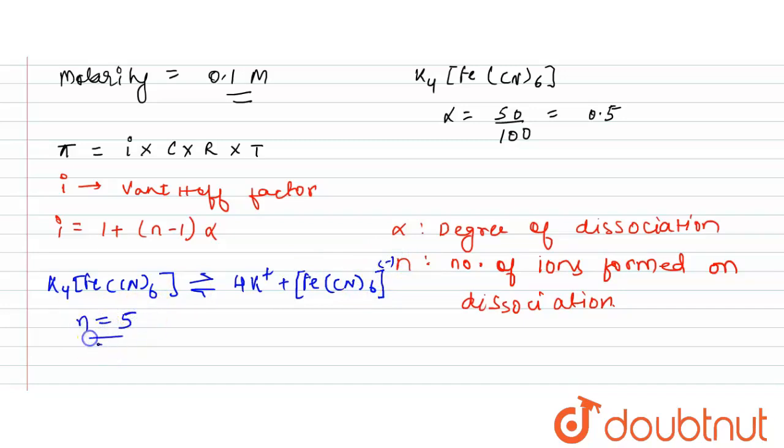So here the value of n is 5. You can see there are 5 ions which are formed on dissociation.